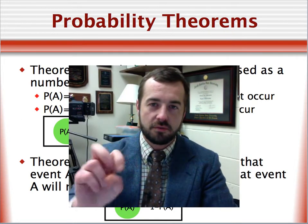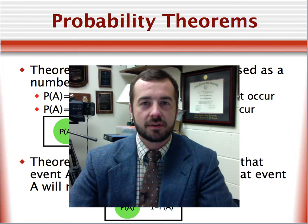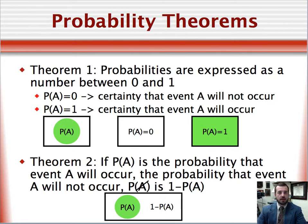I want you to write these down because in the next slide I have an example where I'm going to ask you to tell me what the particular probability is. The first theorem states that probability is expressed as a number between 1 and 0, where a value of 1 is a certainty that an event will occur, and 0 is certainty that an event will not occur. Theorem 2 states that if P(A) is the probability that event A will occur, then the probability that A will not occur is simply 1.0 minus P(A).